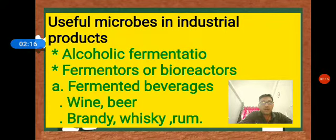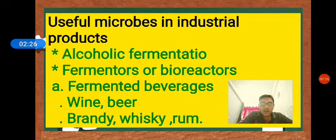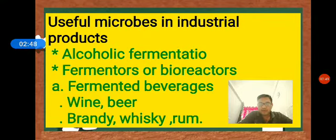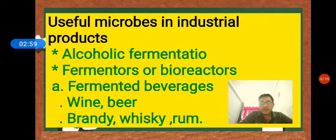Saccharomyces cerevisiae is used for the production of alcoholic beverages like wine, beer, brandy, whiskey, and rum. Wine and beer are obtained without distillation, while brandy, whiskey, and rum are obtained with distillation. Based on raw material: barley for beer, fruit juices for wine and brandy, cereals for whiskey, and molasses for rum.